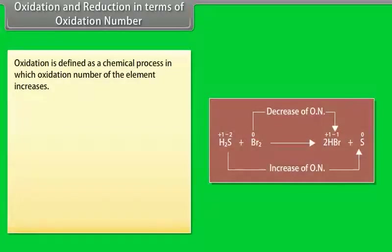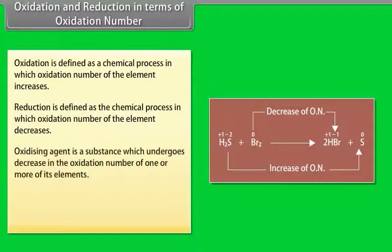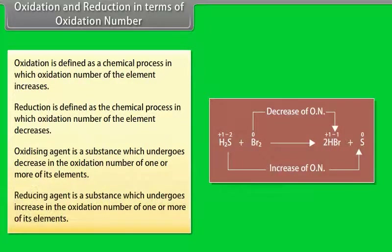Oxidation and reduction in terms of oxidation number: Oxidation is defined as a chemical process in which the oxidation number of an element increases. Reduction is defined as a chemical process in which the oxidation number of an element decreases. For example, in the reaction between H₂S and bromine: the oxidation number of bromine decreases from 0 to −1, so it is reduced; and the oxidation number of S increases from −2 to 0, so H₂S is oxidized. H₂S is the reducing agent and Br₂ is the oxidizing agent.